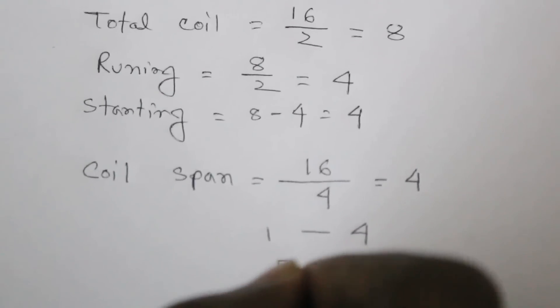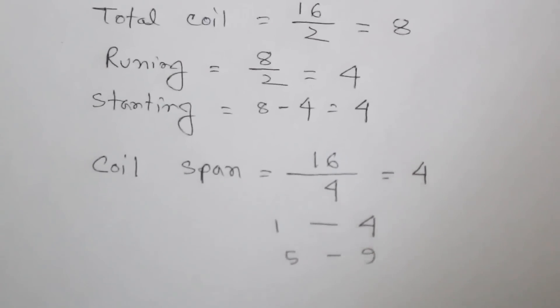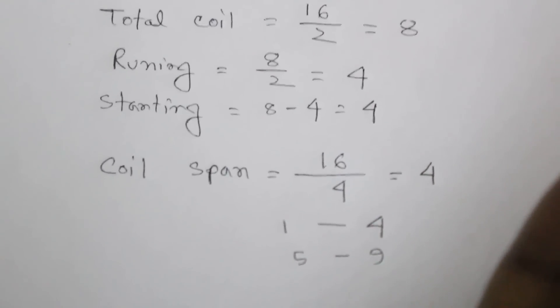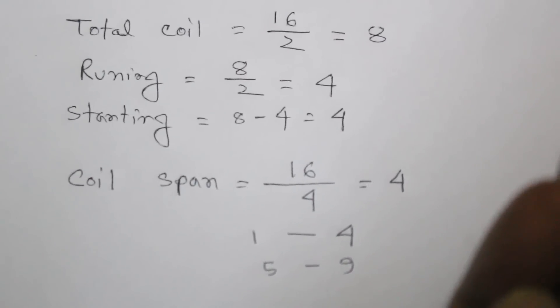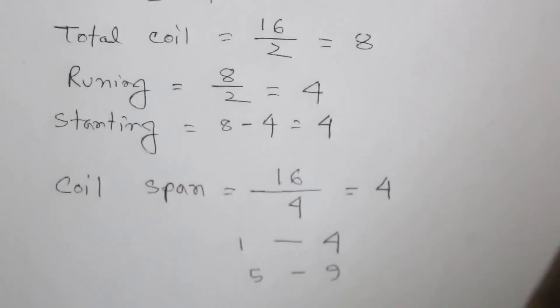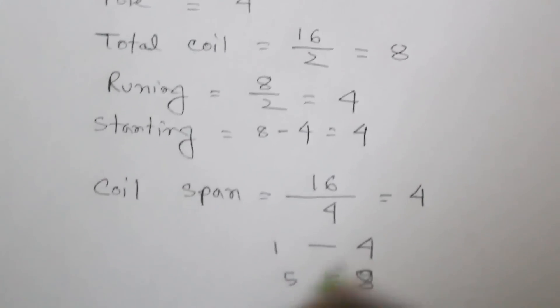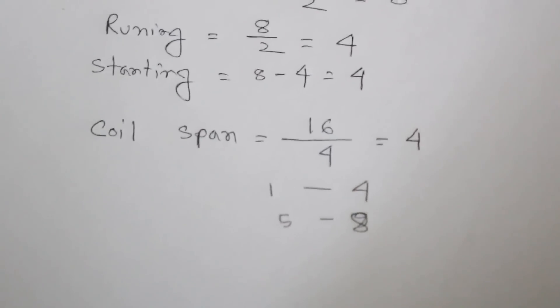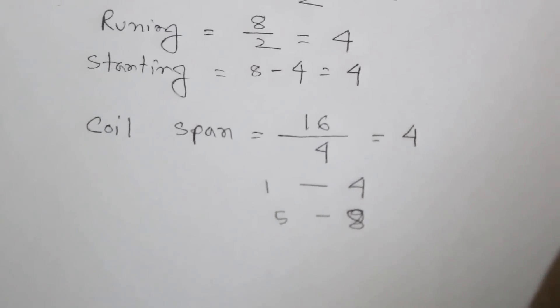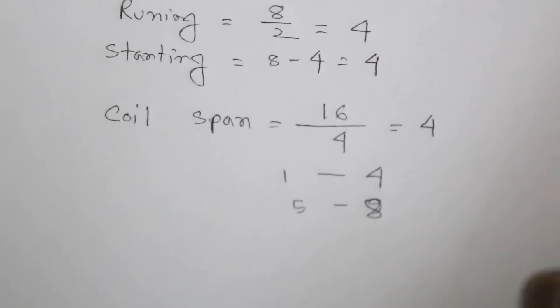And other is 5 to 9. This has 5, 6, 7 - sorry 5, 6, 7, 8. Here is also wrong, this is 8. And first is 1, 2, 3, 4.